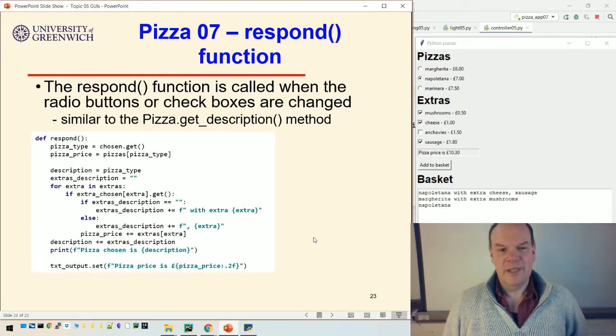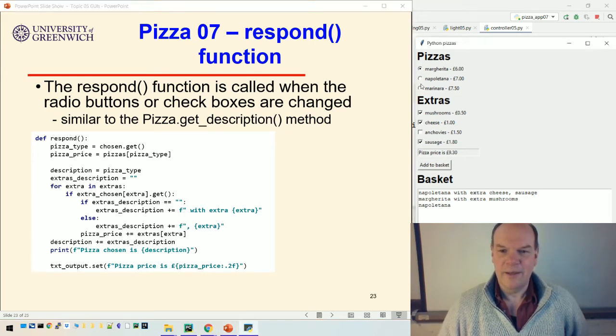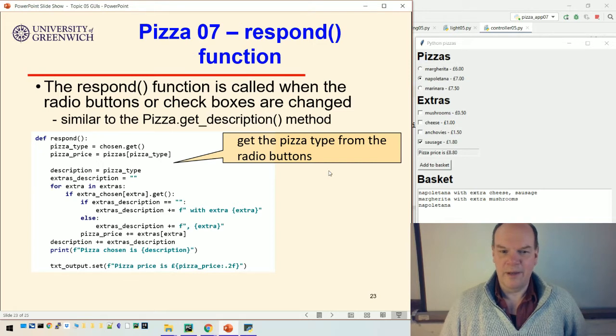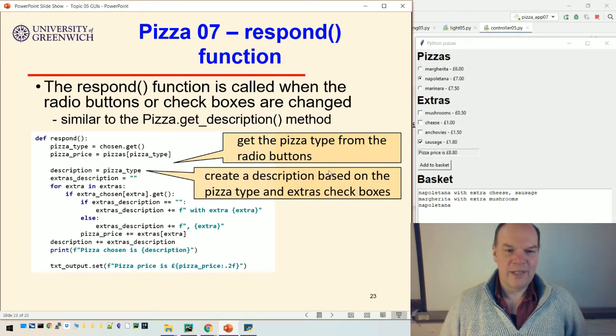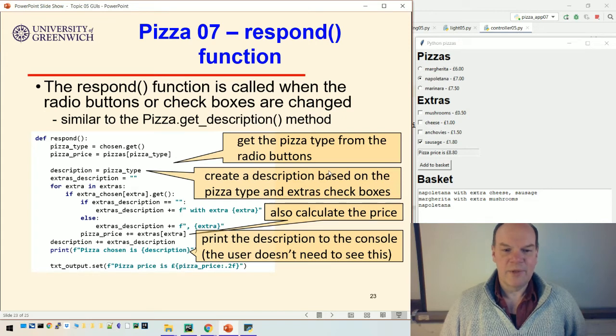So the most important bit of this then is the respond function. There's two bits: the respond function and the add to basket function. The respond button is what happens as you click things in here. As you can see, it's reacting as I'm checking the check boxes or checking the radio buttons. Any of these widgets up here are bound to this respond function. And what does that do? It gets the type of pizza chosen from the radio buttons. It creates a description based on the radio buttons and the extra check boxes, it calculates the price and then prints the description to the console.